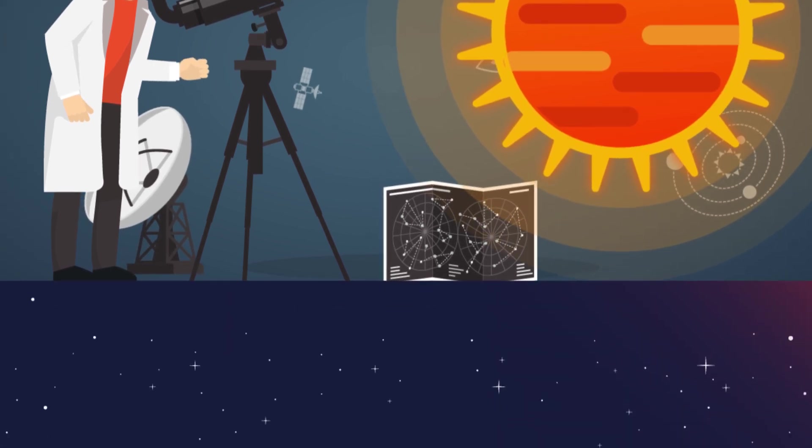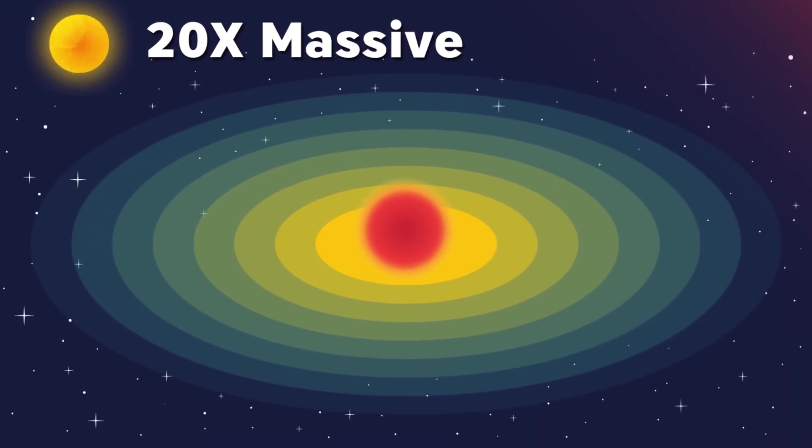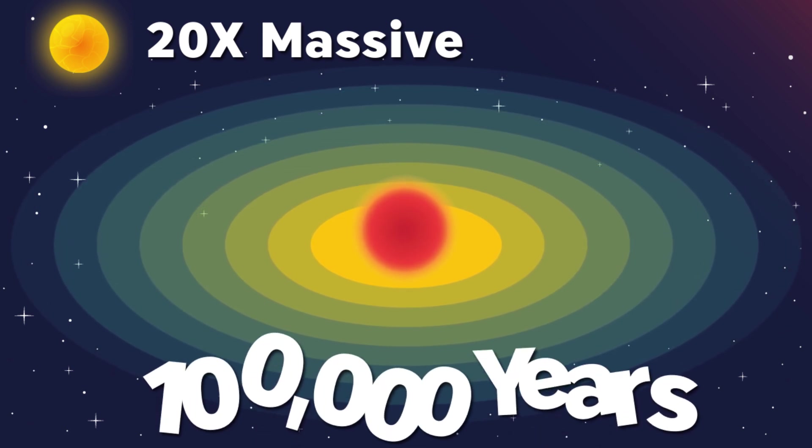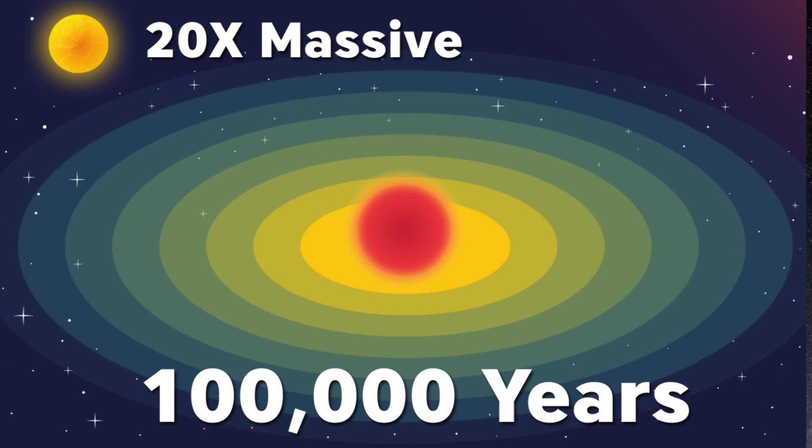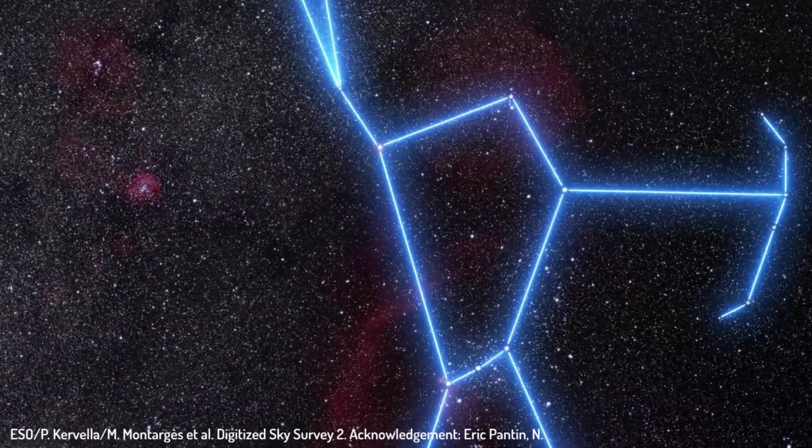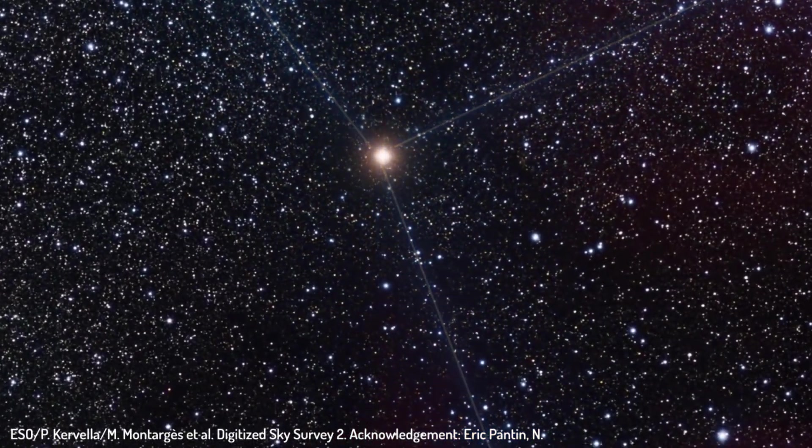If Betelgeuse is almost 20 times as massive as the sun, as most studies indicate, then it will explode sometime within the next 100,000 years, leaving a celestial splatter similar to Cassiopeia A. It's more likely to blow up later in that timeframe, but it's not impossible that it could explode tomorrow.